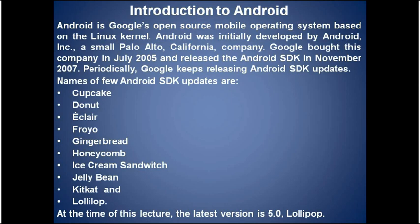Android was initially developed by Android Inc., a small company in Palo Alto, California, which was bought by Google in July 2005. Thereafter, Google released the Android SDK in November 2007.